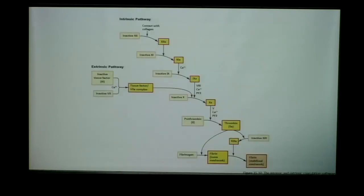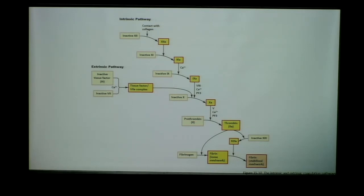Here's a much more complex view of this clotting cascade. We can see the intrinsic and extrinsic pathways. I don't want you to be too concerned about what's happening upstream here — the important areas are what I mentioned before: the cofactors, the convergence at factor 10a, and the functions of thrombin.